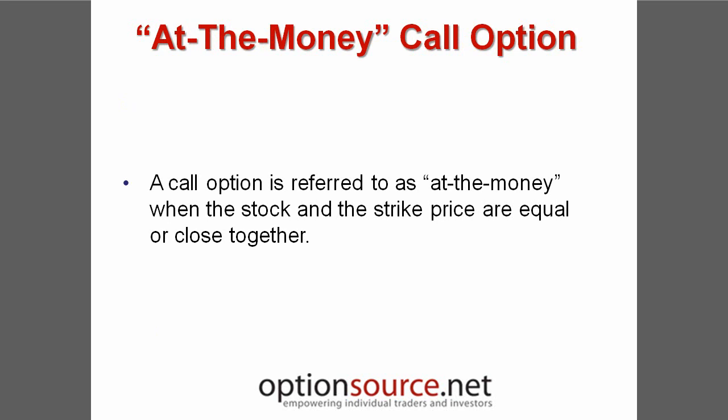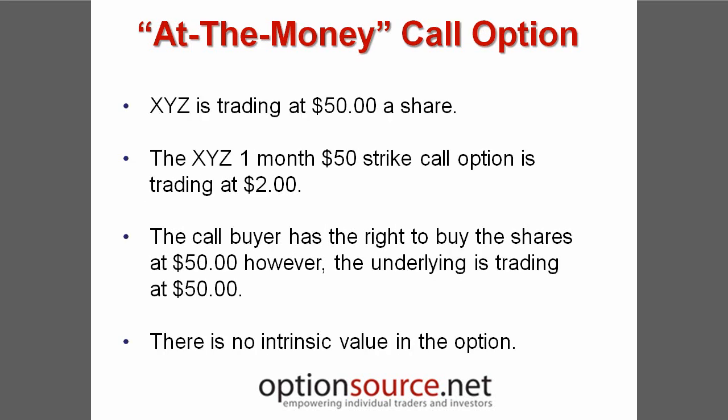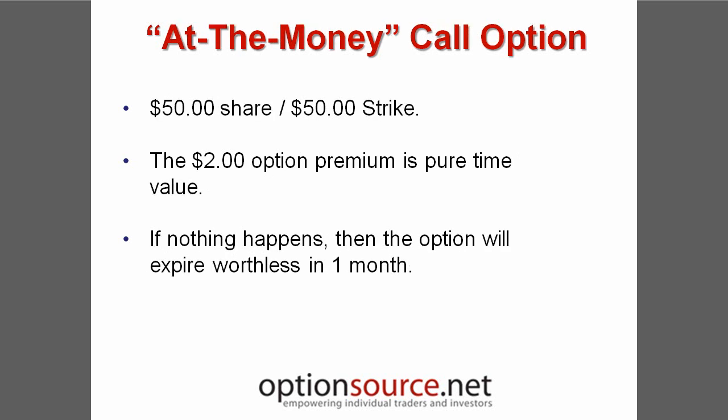A call option is characterized as being at the money when the price of the underlying security and the strike price of the option is the same or very close. For example, let's say that XYZ is trading at $50 per share and the XYZ one-month $50 strike call option is trading at $2 per contract. Remember that option premiums are listed on a per-share basis and each contract represents 100 shares. In this example, the call option buyer has the right to buy the shares at $50. With the shares of XYZ trading at $50, this option has no intrinsic value, and the option premium is made up entirely of time value.